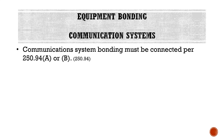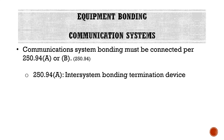Sticking with equipment bonding, we're going to look at communication systems. Communications systems bonding must be connected per 250.94A or B — we have two options. Part A is an inter-system bonding termination device, which we defined earlier. And 250.94B covers other listed or approved means, though typically you're going to be using an inter-system bonding termination device.